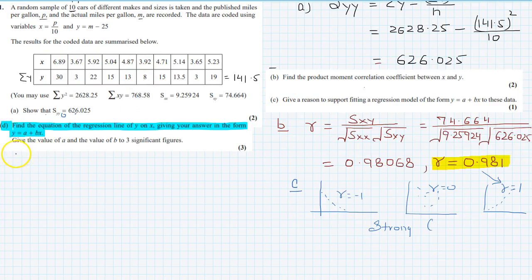So the equation of a regression line is y is equal to a plus bx. And we know that a is equal to mean of y values minus b times mean of x values. So mean of x values is sigma x over n.